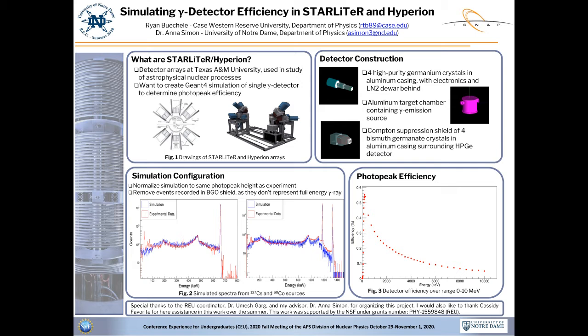Each run of the simulation includes millions of individual gamma ray events, which produce a photon and keep track of it as it travels through the simulated room, potentially interacting with and scattering from materials that it encounters. These interactions can include absorption of the photon through the photoelectric effect, where a gamma ray excites an electron in the germanium crystal from the valence to conduction band and creates a current, or Compton scattering from colliding with a particle where a portion of the gamma ray's energy is given to the kinetic energy of the particle.